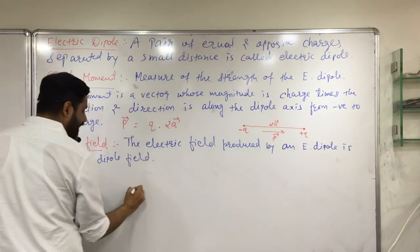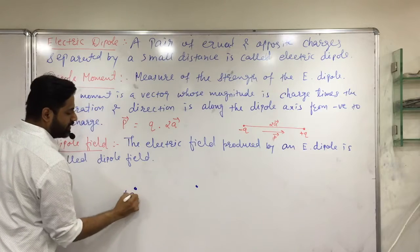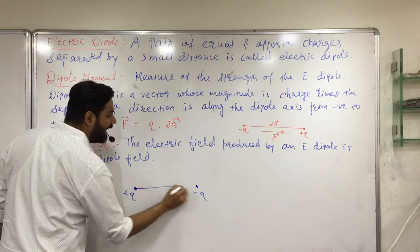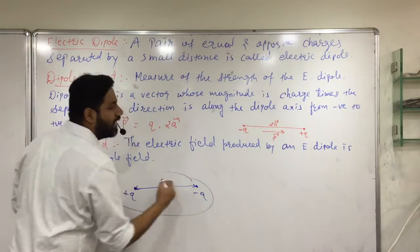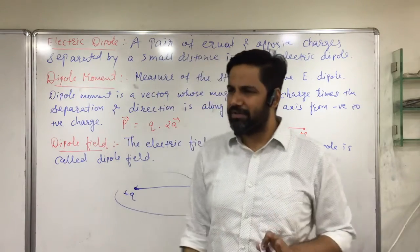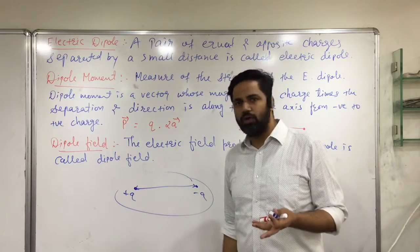We have two charges, a positive charge and a negative charge. If they are separated by a finite distance, then this entire system is called a dipole. You people have studied this in chemistry before. We know what dipole is.